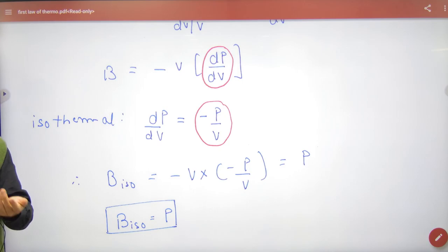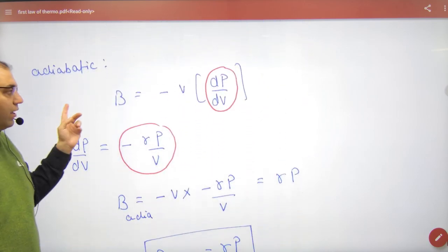Bulk modulus equals pressure in isothermal. But if this same process is on adiabatic?